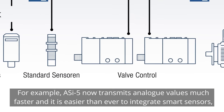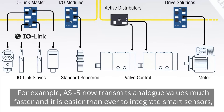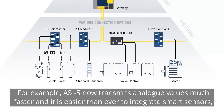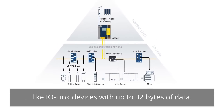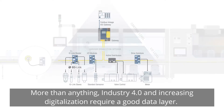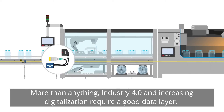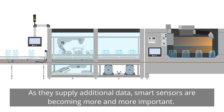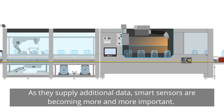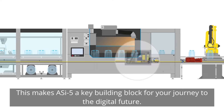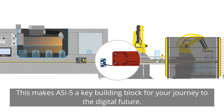For example, OSI 5 now transmits analog values much faster, and it is easier than ever to integrate smart sensors like IO-Link devices with up to 32 bytes of data. More than anything, Industry 4.0 and increasing digitalization require a good data layer. As they supply additional data, smart sensors are becoming more and more important. This makes OSI 5 a key building block for your journey to the digital future.